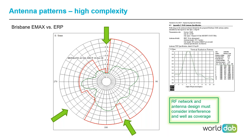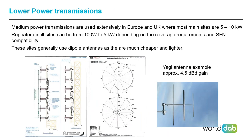When designing an antenna — considering both the horizontal and vertical radiation patterns — we always have to consider interference to other areas as well as the coverage we're targeting. We also have medium and low power transmissions: while Australia's main capital cities are 50 kW ERP, Europe typically has main sites at 5 to 10 kW with more closely spaced, smaller license areas. Repeaters and infill sites can be anywhere between 100 watts and 5 kilowatts. They're typically 2 to 6 element dipole arrays, and some repeaters might use Yagis for better gain and directionality.